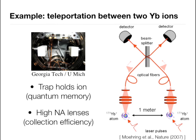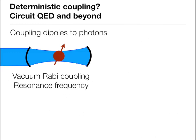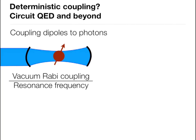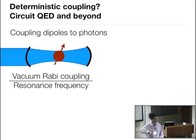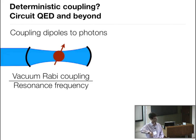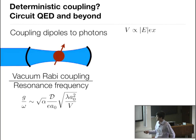Instead of doing things probabilistically with high photon loss, can we do it deterministically? That requires a foray into cavity electrodynamics — specifically circuit QED in the microwave domain. The important parameter is the vacuum Rabi coupling divided by the resonance frequency. The vacuum Rabi coupling is how much a single spin excitation couples to the vacuum field of the cavity. The underlying interaction is an electric dipole: the electric field of the cavity coupled to a dipole — charge times position. This gives a vacuum Rabi coupling over resonance with the square root of the fine structure constant out front.